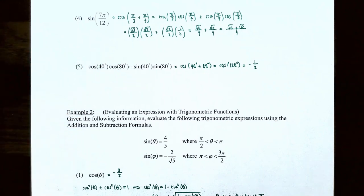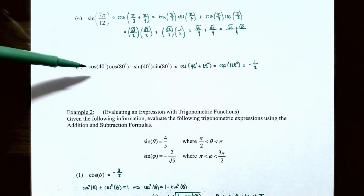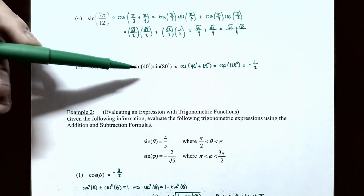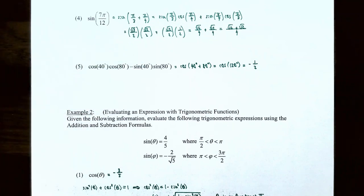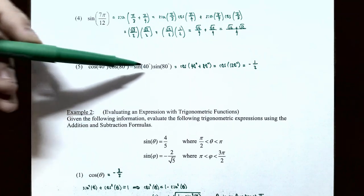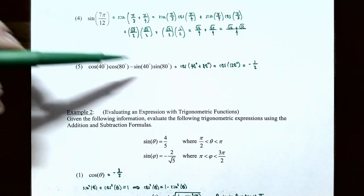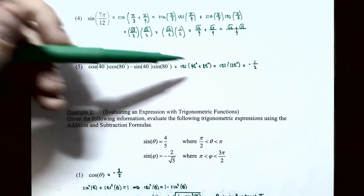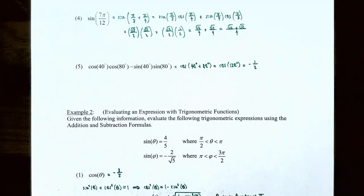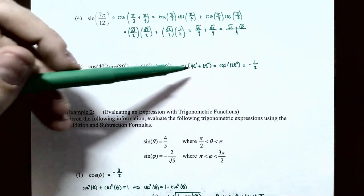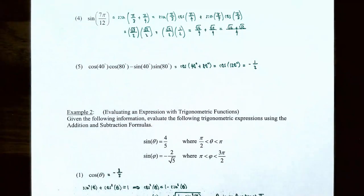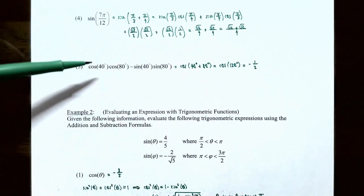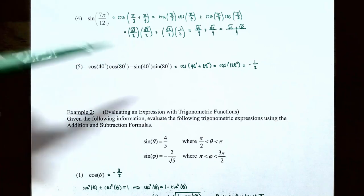Number five: we already have the expression written out as cos(40°)·cos(80°) - sin(40°)·sin(80°). This matches the addition formula for the cosine function — cosine times cosine minus sine times sine — so this equals cos(40° + 80°) = cos(120°), which equals negative 1/2.